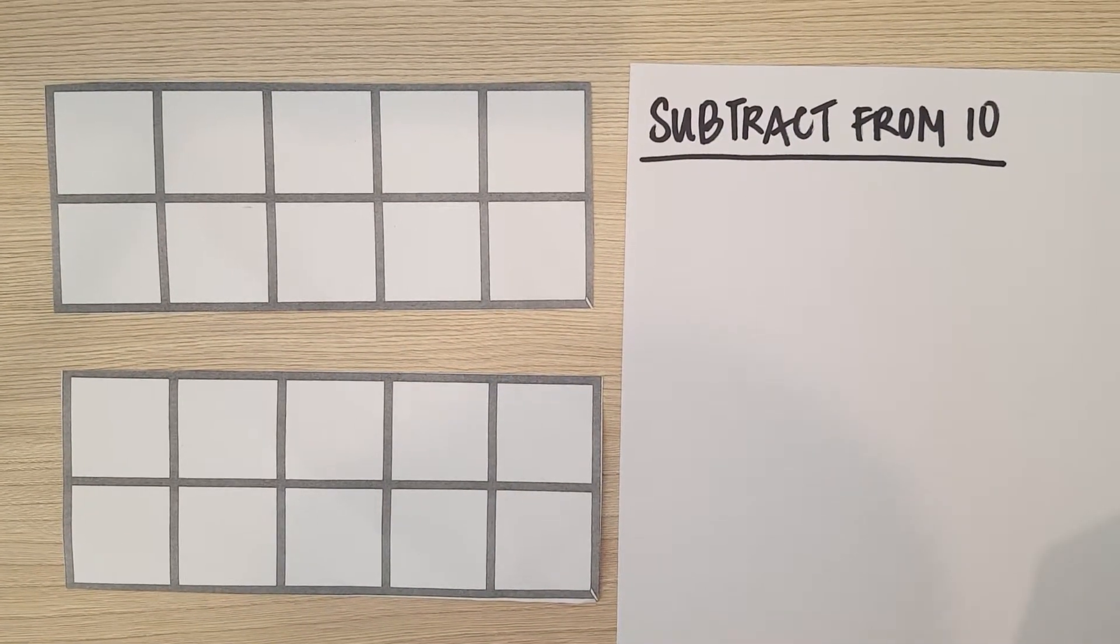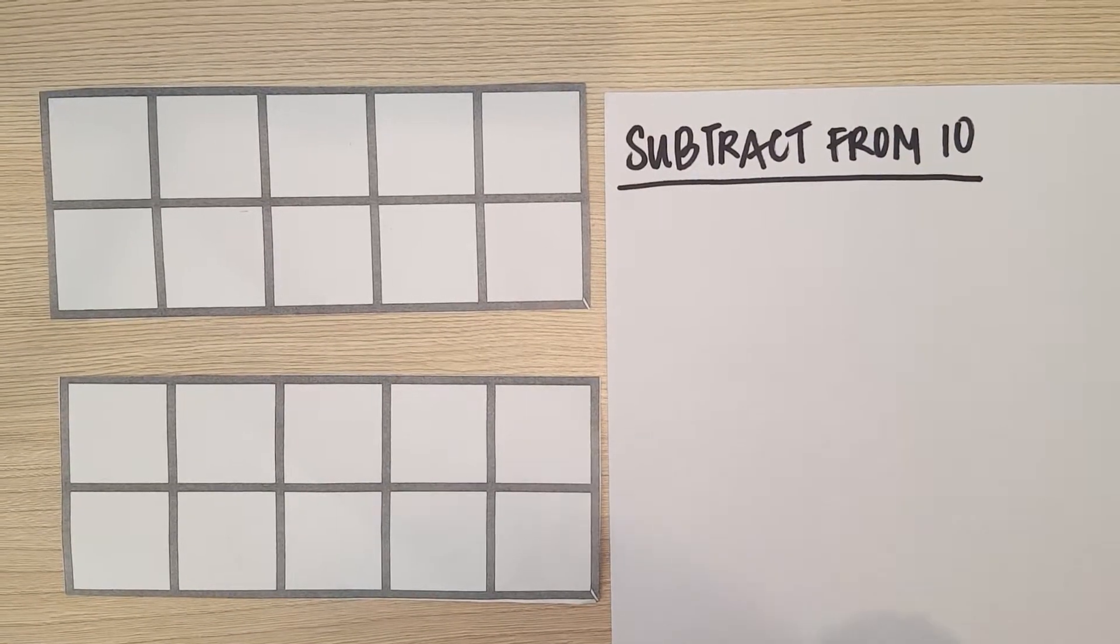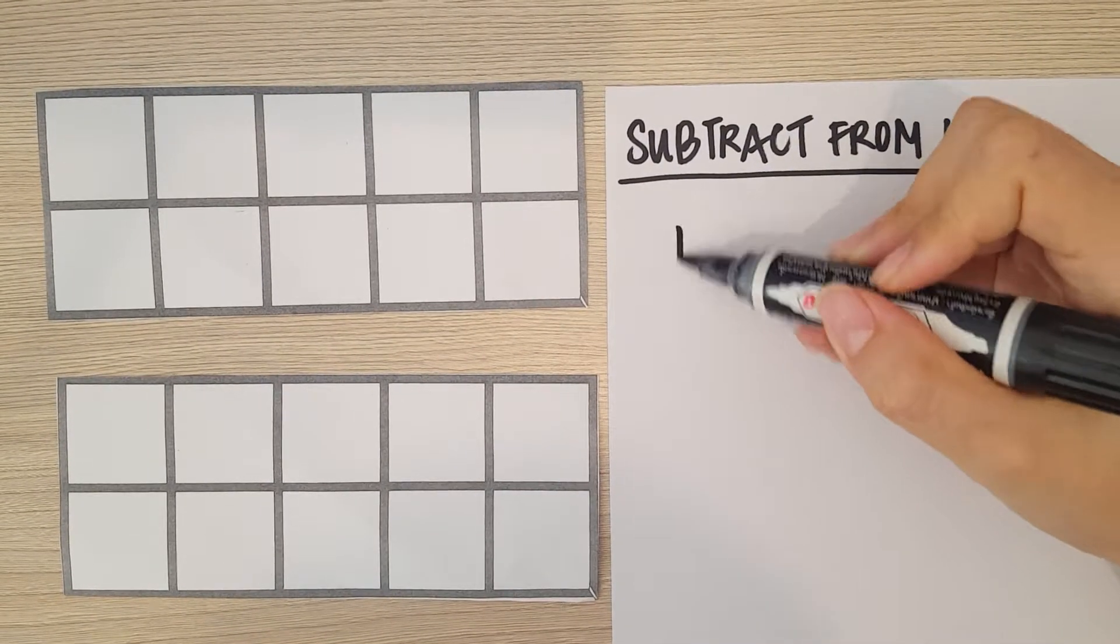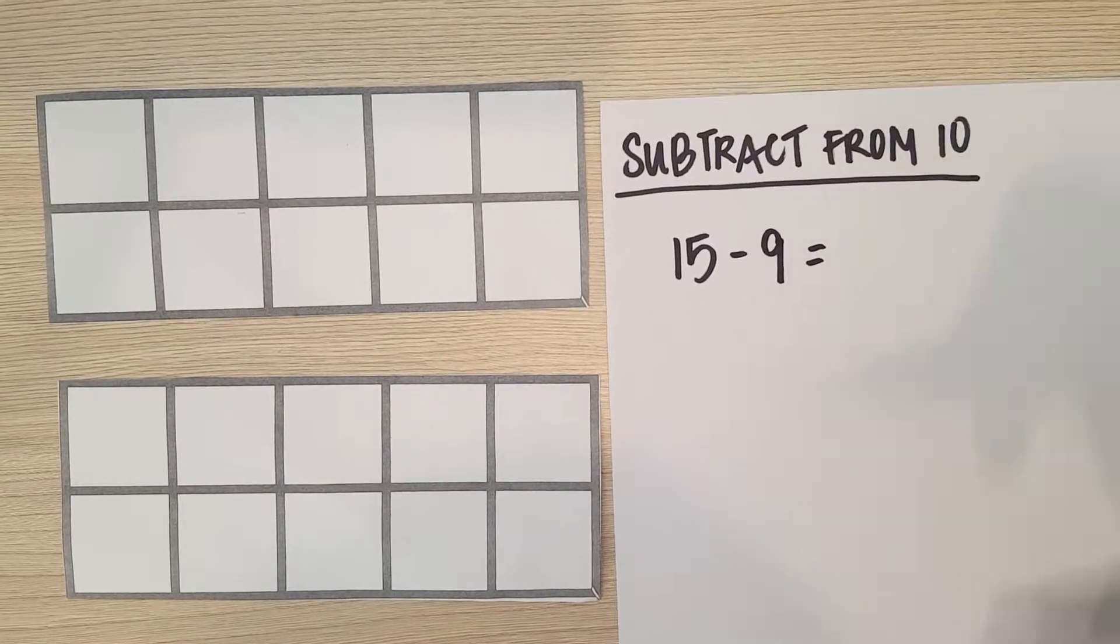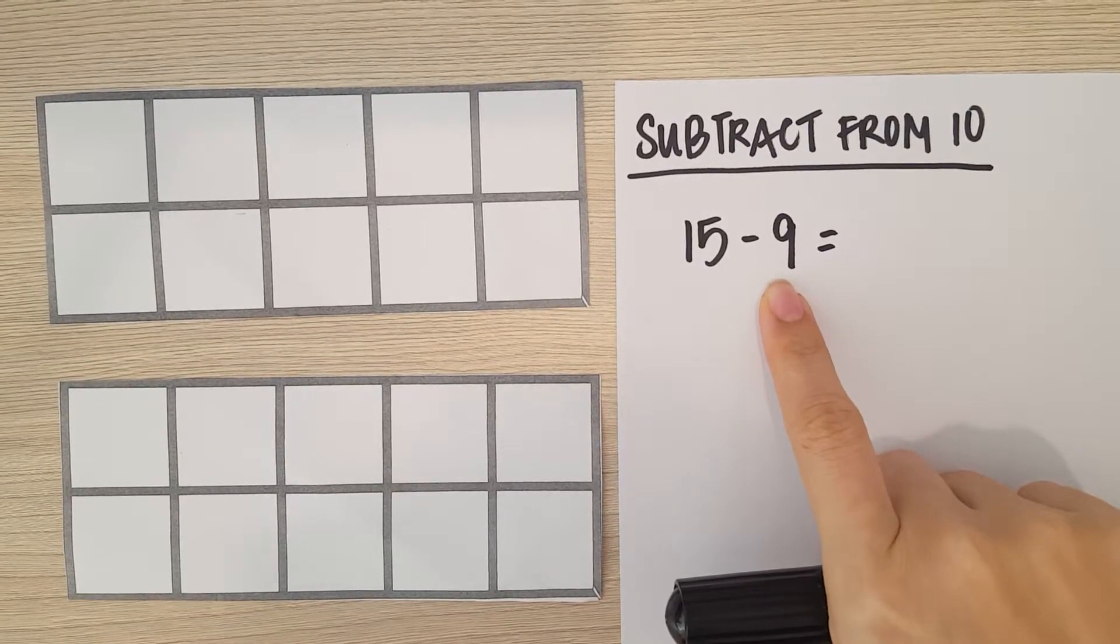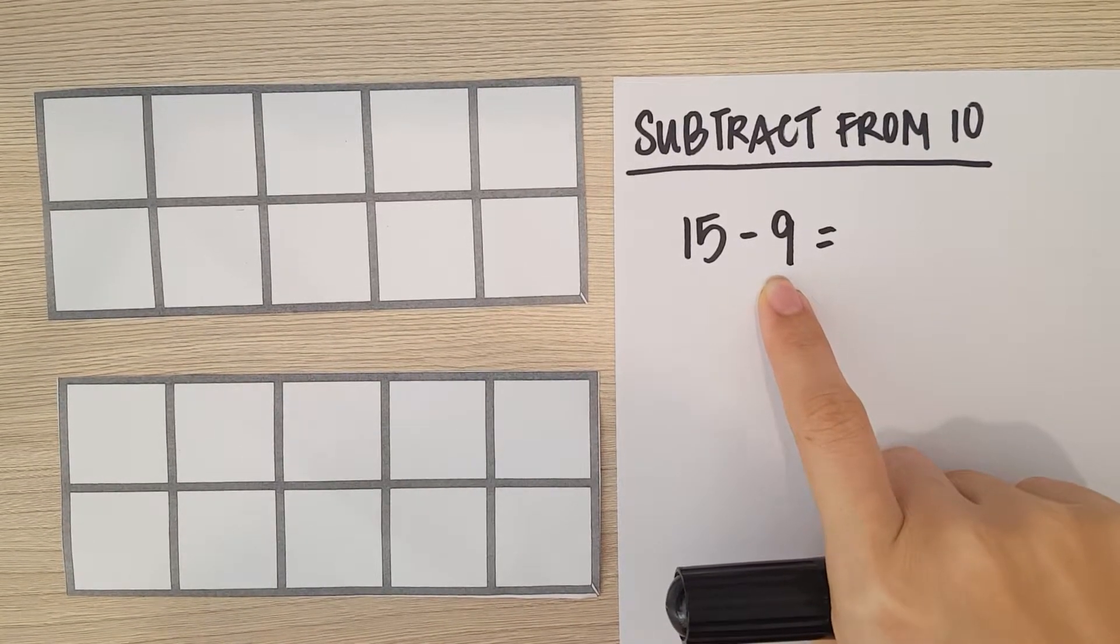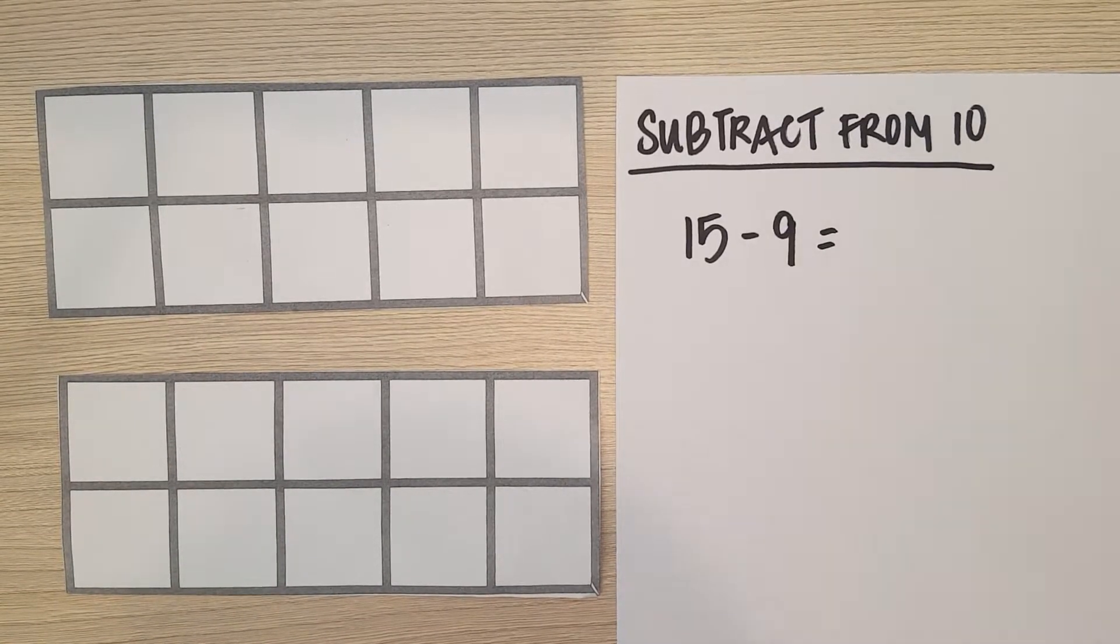Hi everyone, today we're going to learn how to subtract from 10. The question we are going to do is 15 minus 9. A lot of you will be tempted to just count backwards, but that's a long way to count. You're going to count back nine steps and that could cause a lot of mistakes.